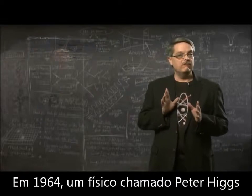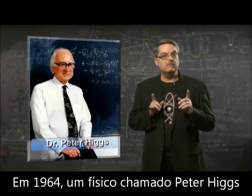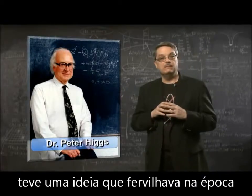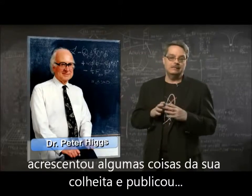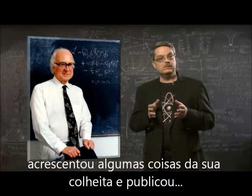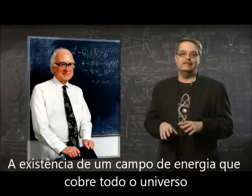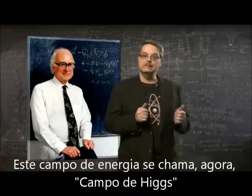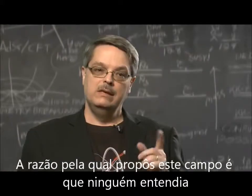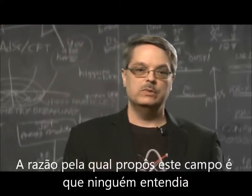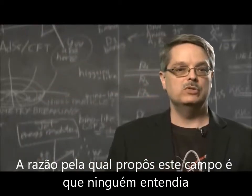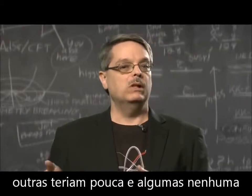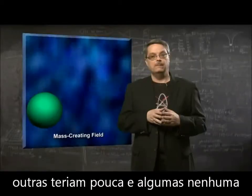In 1964, a physicist by the name of Peter Higgs took some ideas that were floating around at the time, added an insight or two of his own, and proposed that there was an energy field that permeated the entire universe. This energy field is now called the Higgs field. The reason he proposed this field was that nobody understood why some subatomic particles had a great deal of mass, while others had little and some had none at all.